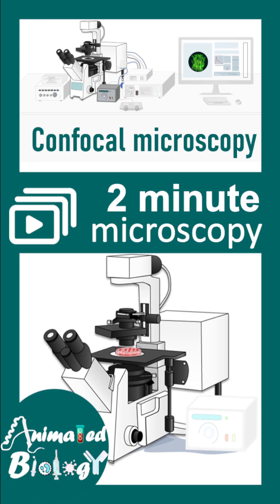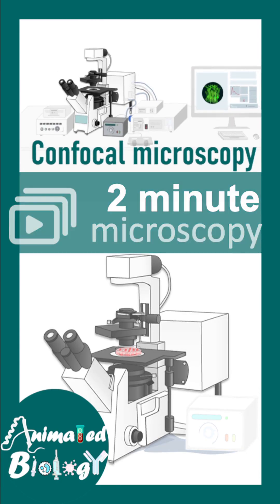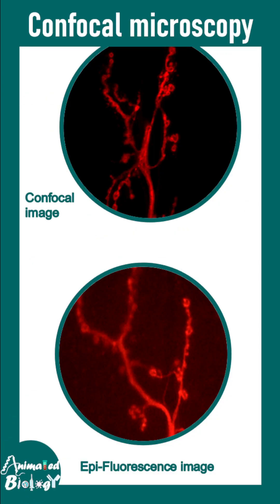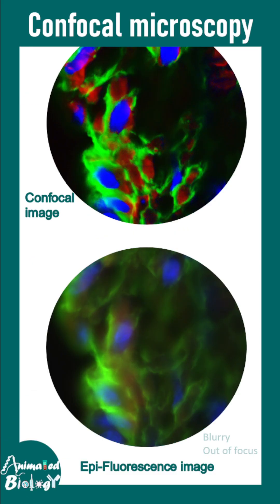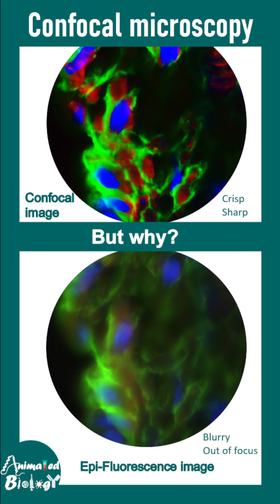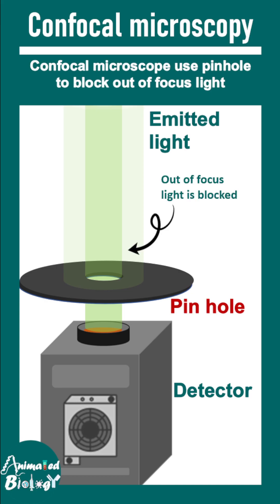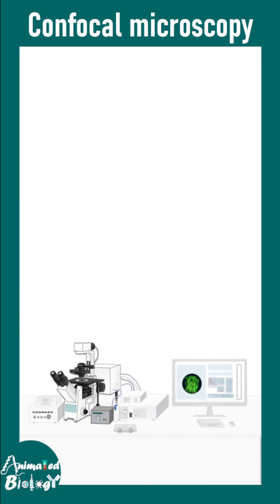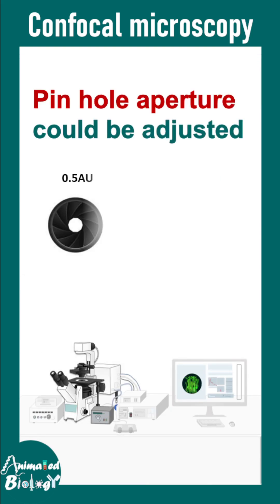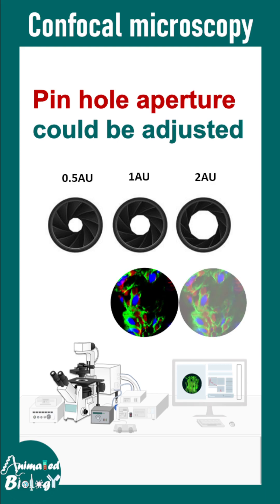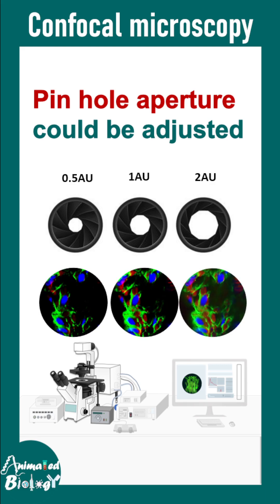Welcome to Two Minutes Microscopy. In this installment we'll talk about confocal microscopy, which works on the principle of fluorescence. Confocal images are sharper and crisper — the reason lies at the heart of the confocal: a pinhole, which blocks all out-of-focus light. The pinhole aperture can be adjusted in the confocal, and based on how we adjust it, the contrast and signal will differ.